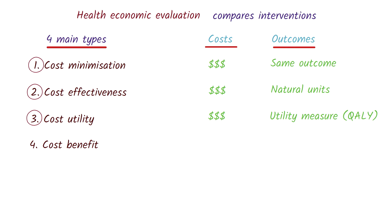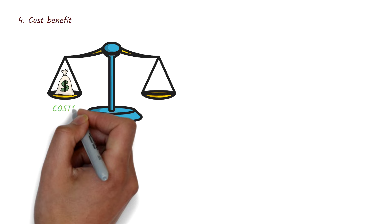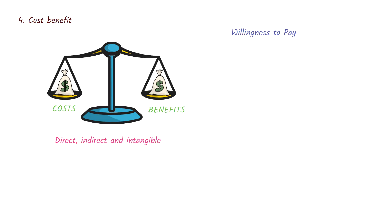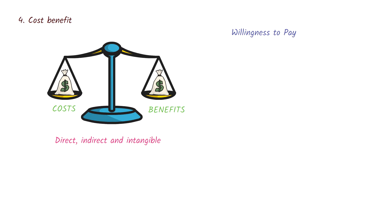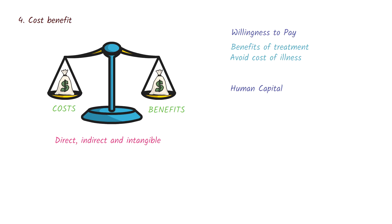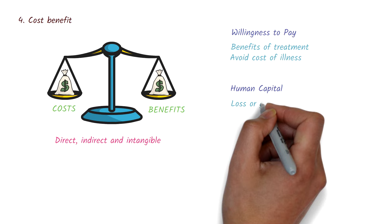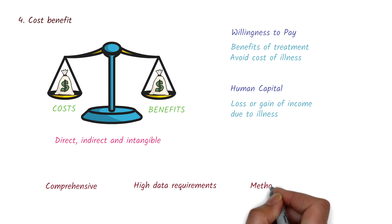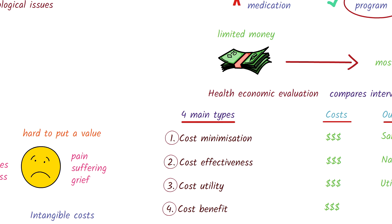Now let's have a look at cost-benefit analysis. This type of analysis measures both the cost and outcome in monetary terms. A cost-benefit analysis tries to account for all costs and all benefits — direct, indirect, and intangible. To calculate benefits, a variety of tools can be used. The willingness-to-pay method determines the value that people attach to health outcomes, by asking how much they're willing to pay to have the benefits of the treatment or to avoid the costs of illness. The human capital method places a monetary value on the person's life, based on the loss or gain of income due to the illness. Although comprehensive, the data requirements can be quite high, and there are methodological issues when it comes to determining a value on life and productivity.